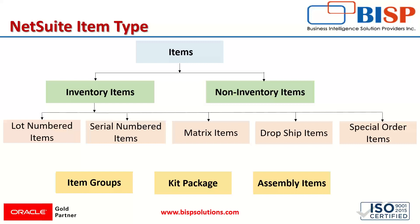First we should know what inventory items are. Inventory items are physical goods that we buy and sell, and we also record them into our inventory. On the other hand, non-inventory items are also physical goods that we buy and sell, but these are not recorded into our stock.